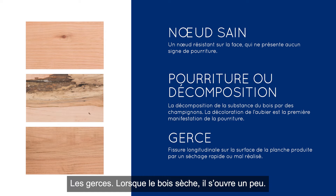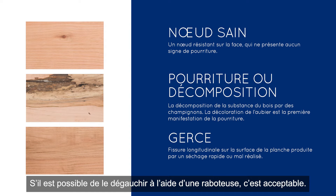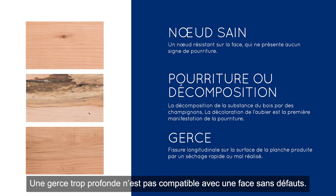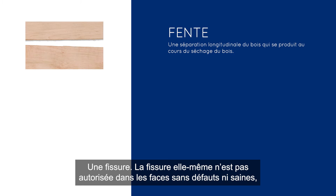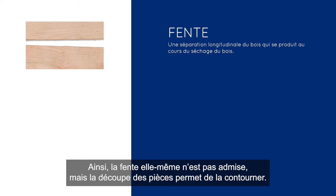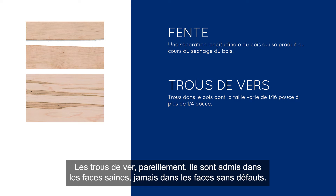Checks — when the wood dries it separates a little bit. If it would surface off through a planer, that's acceptable; if it doesn't, it would be considered sound and not in a clear cutting if it's too deep. A split itself is not allowed in a clear-faced or sound cutting, but in our grading system we can measure on either side of it and still achieve our grade — the split itself is no good, but you can cut around it. Wormhole is sound, so it would be in a sound cutting but never in a clear-faced cutting.